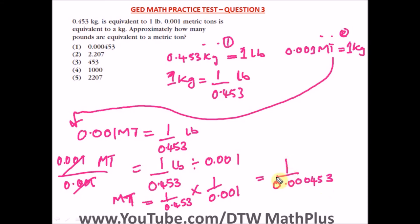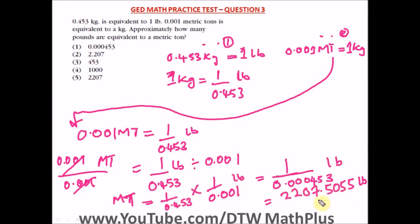When you divide 1 by 0.000453 — punch that into your calculator — you are going to get 2207.5055 LB. Don't forget the unit LB. Looking at this answer, the closest option is 2207, which is option 5. So our answer is 2207 LB, which is option 5.